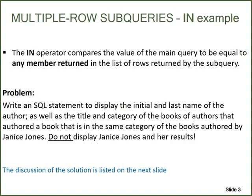As an example, we're going to write an SQL statement to display the initial and last name of the author, as well as the title and category of the books of authors that authored a book that is in the same category of the books offered by Janice Jones. Do not display Janice Jones and her results. The question we have to ask ourselves first is: what must the subquery do? So the subquery must ask: what category of books was offered by Janice Jones?